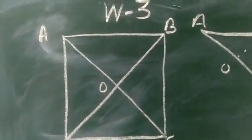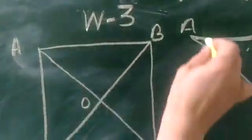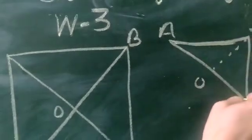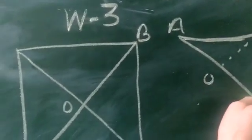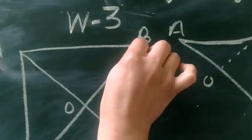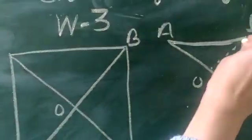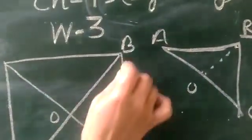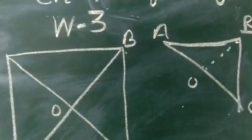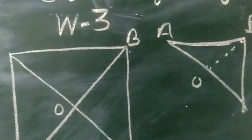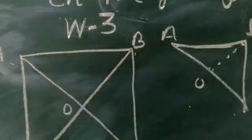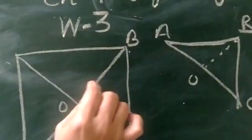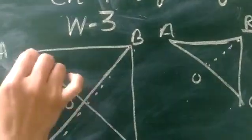If we take a small portion of this — A, B, C, D and O — this isosceles triangle having 2 equal sides, then it is having 1 line of symmetry. Thus this line BD is the line of symmetry. Again, considering triangle DAB, it is having 1 line of symmetry. So the first line is this and the second line is this.